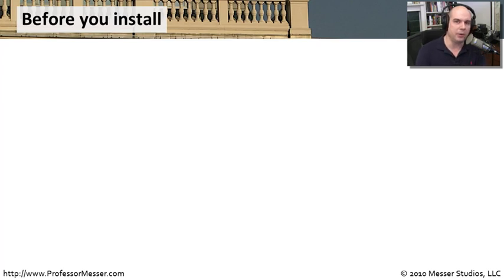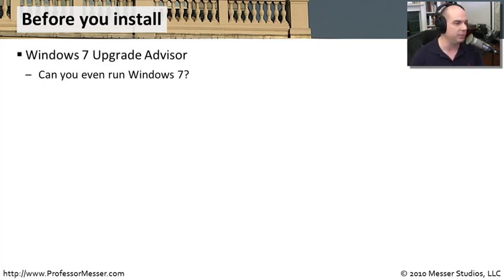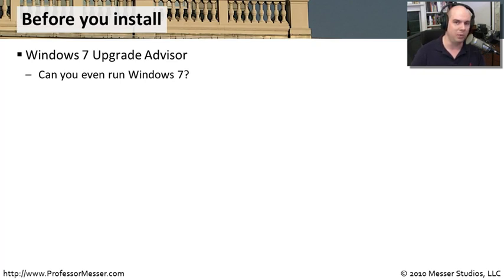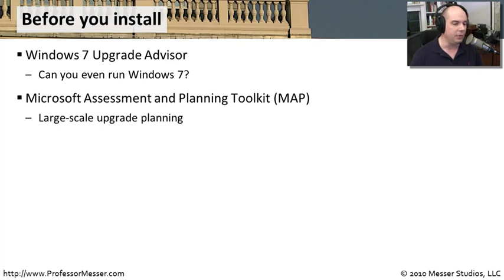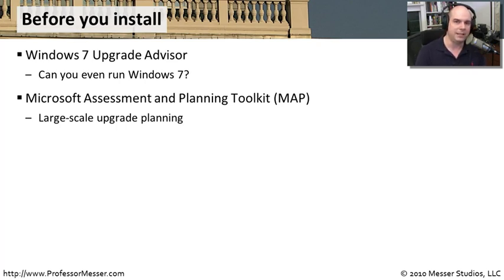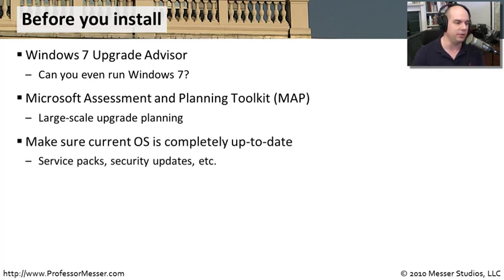Before you upgrade to Windows 7, it would be nice to know if your hardware and software can actually work properly with Windows 7. So before you install, you may want to run the Windows 7 Upgrade Advisor, which is included on the Windows 7 installation media and also downloadable from the Microsoft website. If you're in a very large environment and can't go to every single machine, Microsoft has created the Microsoft Assessment and Planning Toolkit - abbreviated MAP - a centralized console that automatically retrieves information from different machines.